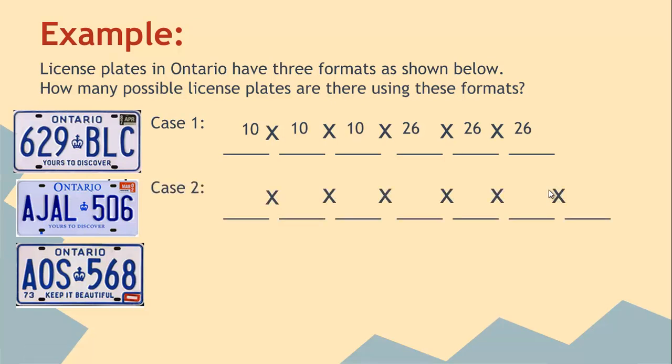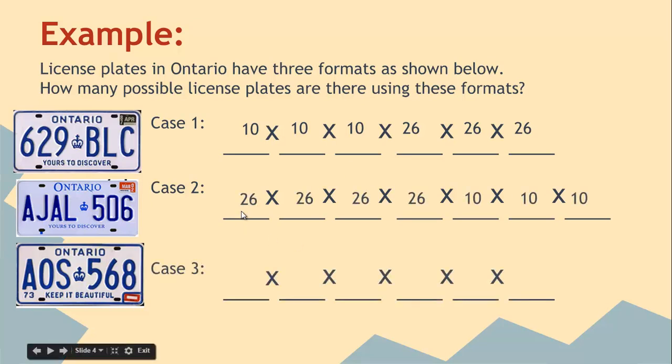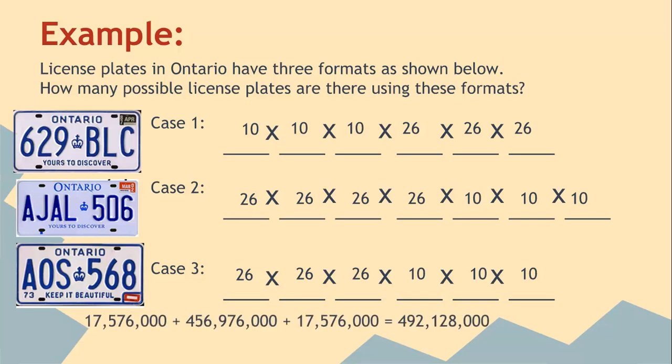In case two we actually have a seven digit where the first four are letters and the last three are numbers. So there are a number of ways to do that because you can repeat digits as 26 times 26 times 26 times 26 and then 10 times 10 times 10. In case three it's very similar to the first case, just the letters come first, so it's calculated to be the same number. To get the total number of cases we just add up those three numbers and we get 492 million license plates.